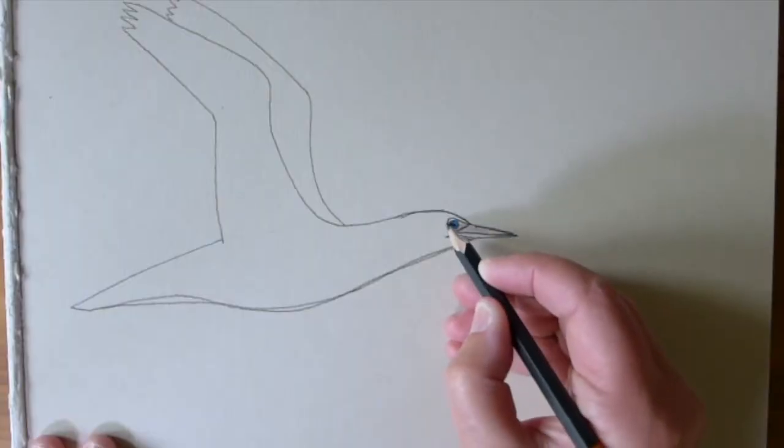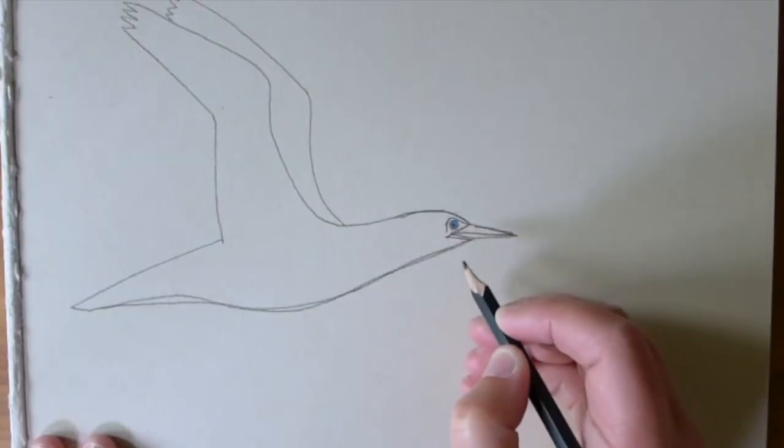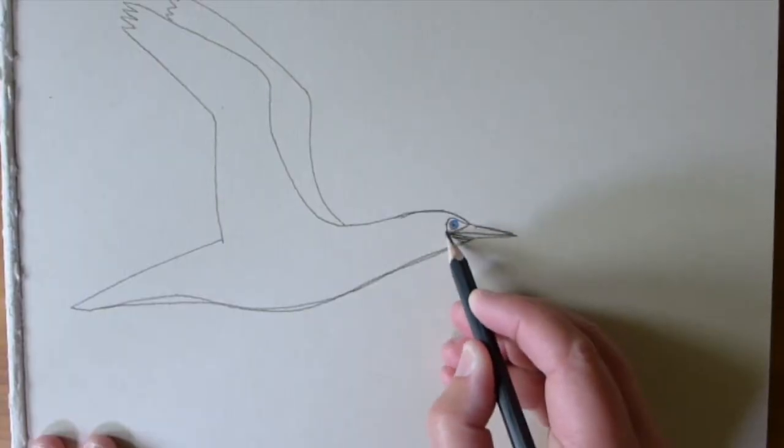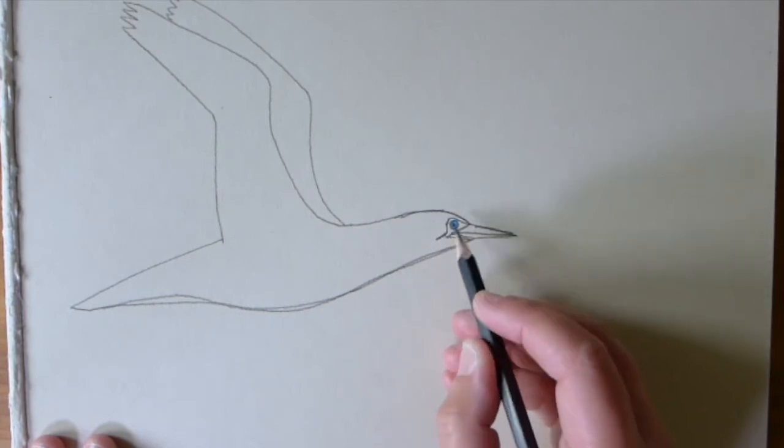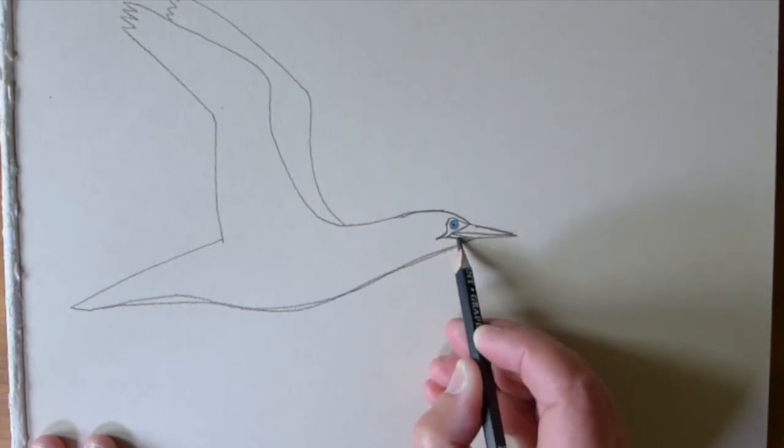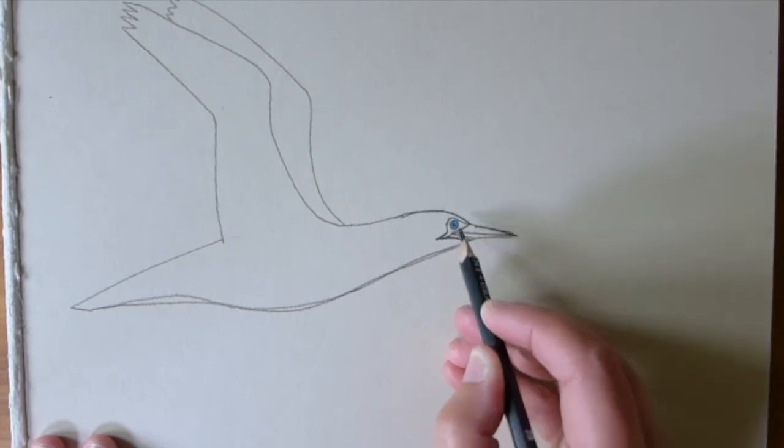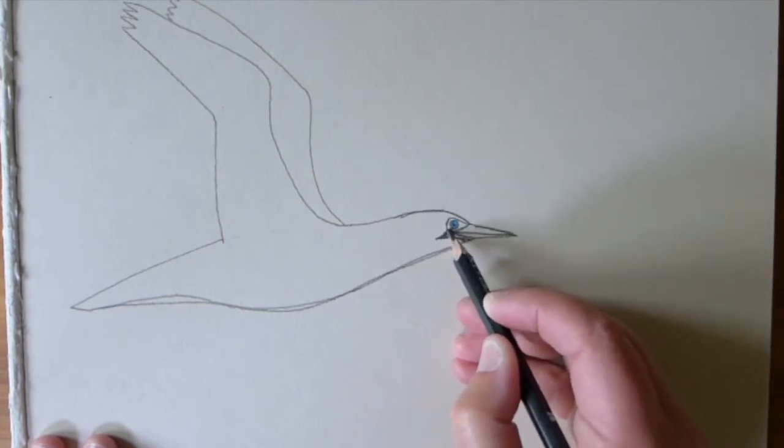So once you've done your eye we're then going to put the striking markings on the face of the gannet just here and colour that in.